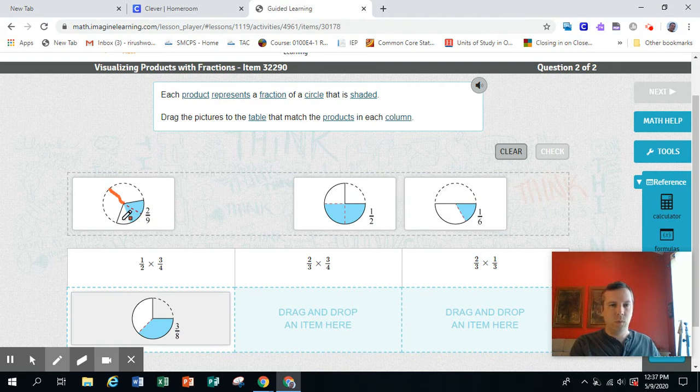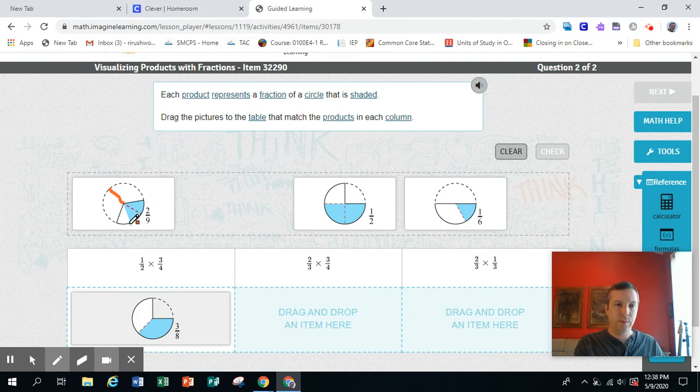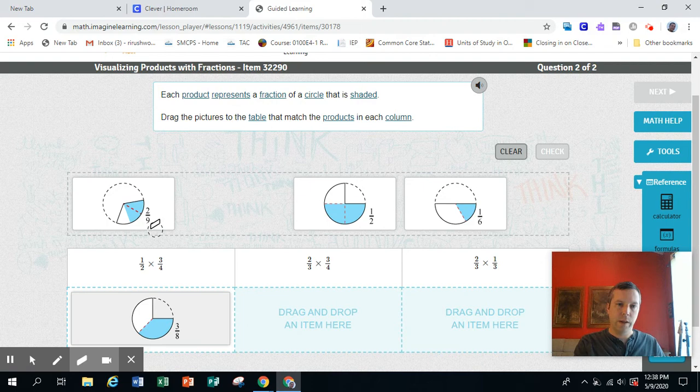And so it would be 1, 2, 3 to fill in the hole. So this is a third. So I'm starting out with 1 third. I'm going to erase that line. Starting out with 1 third.